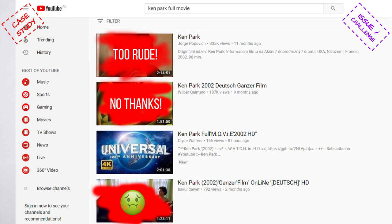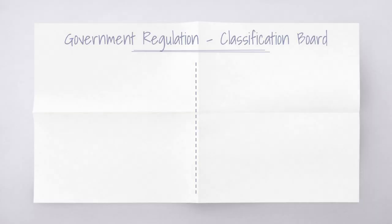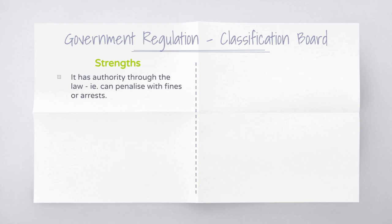This raises a big challenge to how governments regulate the media. A strength of government regulation is that it has the authority to penalise people with fines and arrests — it is legally binding, which is a real incentive for people to do the right thing. Another strength is that every single film and game is checked before it's released to the public, meaning there is consistency in rulings and classifications.